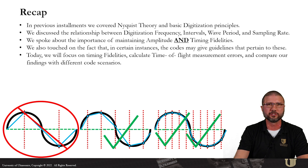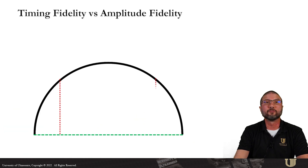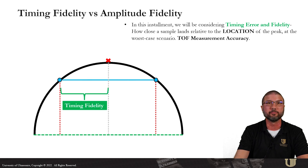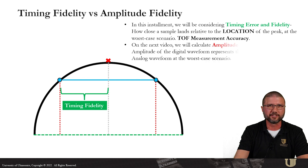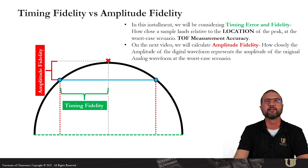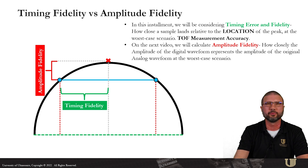We'll also calculate margins of error and compare our findings to a few different code scenarios. Timing error and fidelity — what that really means is how close a sample lands to the location of the peak, given a worst case scenario. On the next video we will calculate amplitude fidelity, which is how closely the digital amplitude represents the analog amplitude. Those are two completely different parameters. They often get lumped together as one, but that's a mistake.